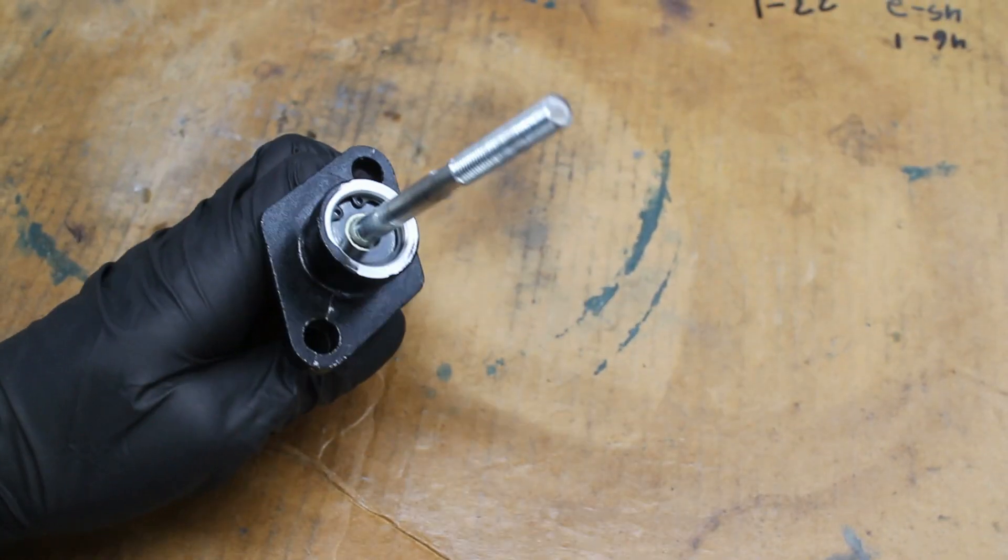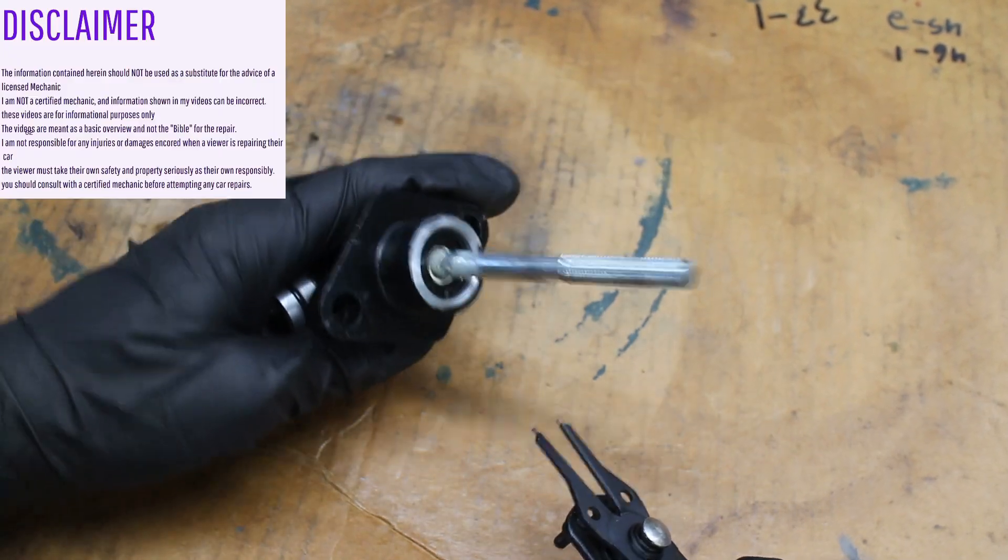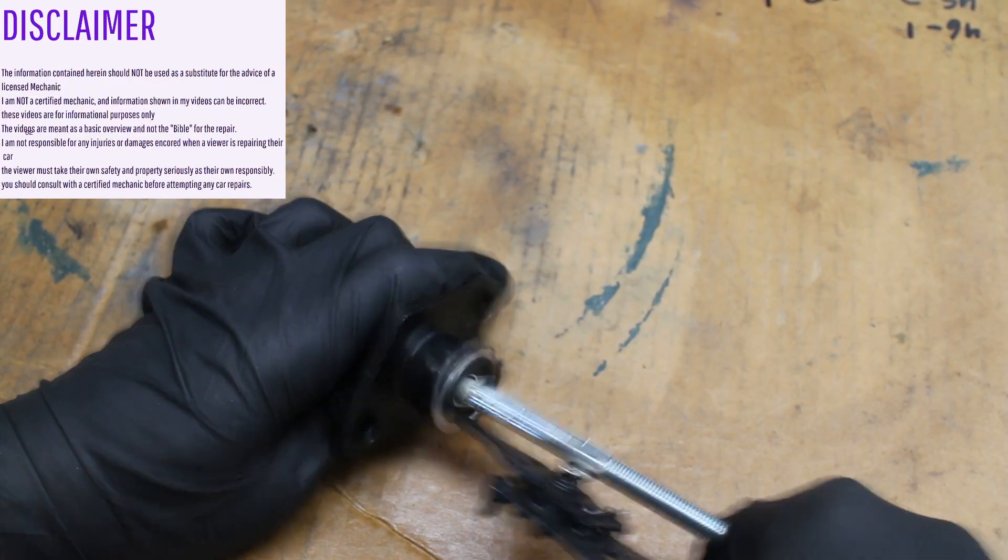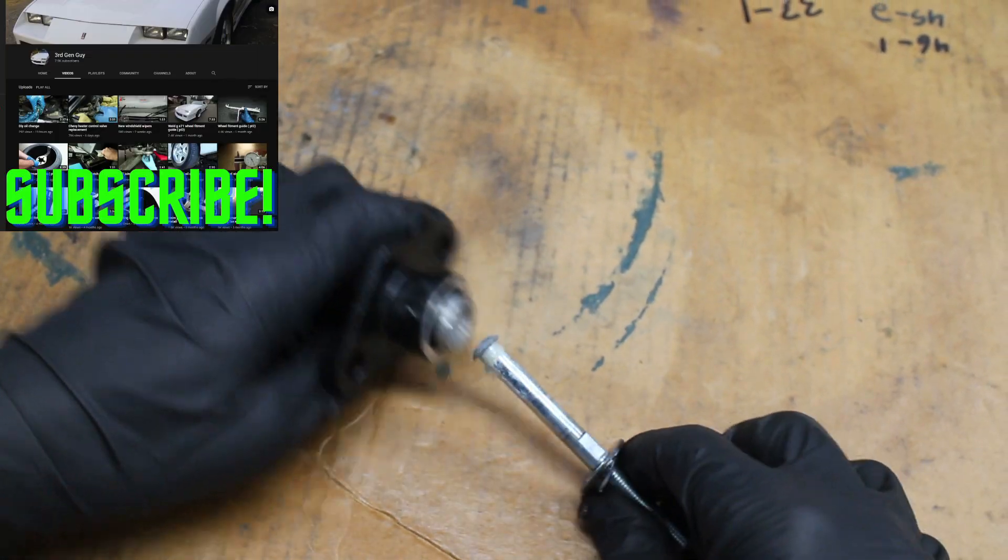The guts of this master cylinder are held in place by this locking ring. Careful when you remove it because it will shoot out because it's spring-loaded.